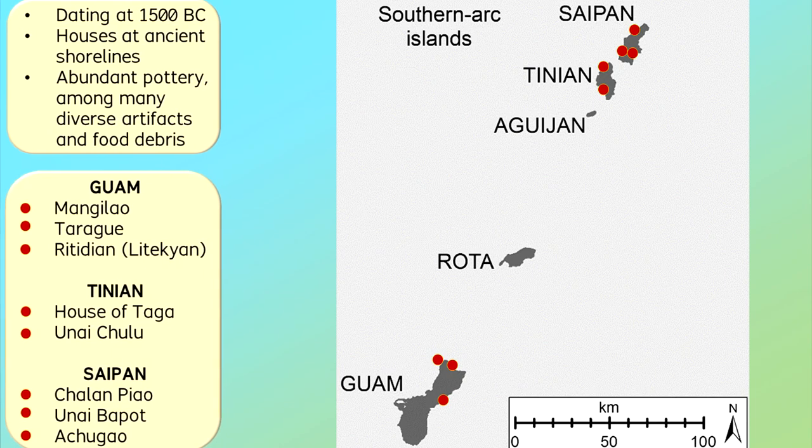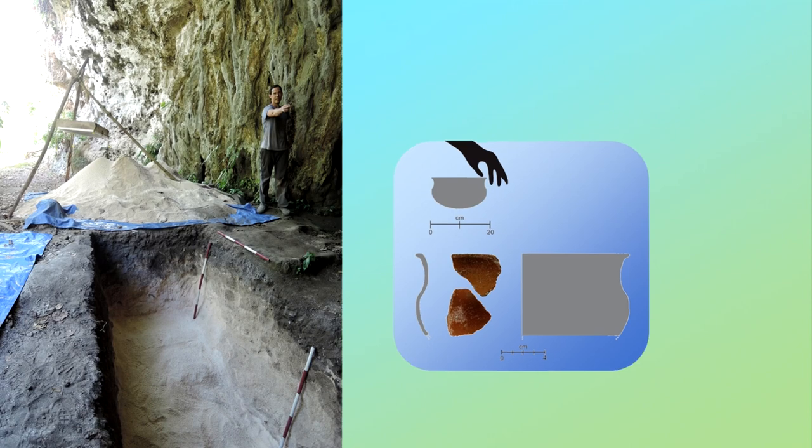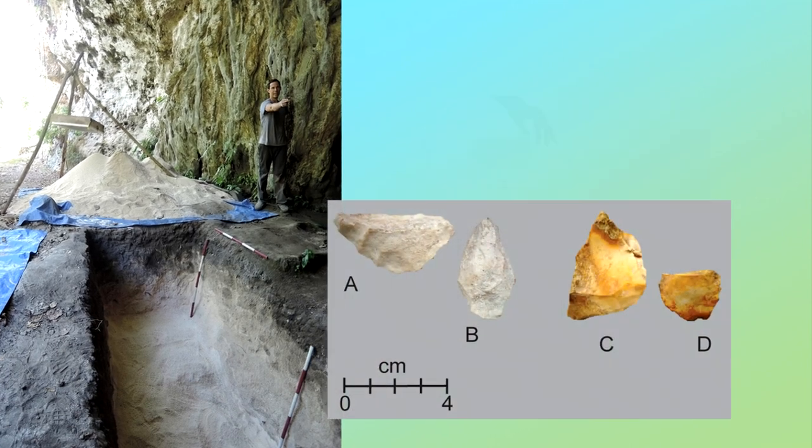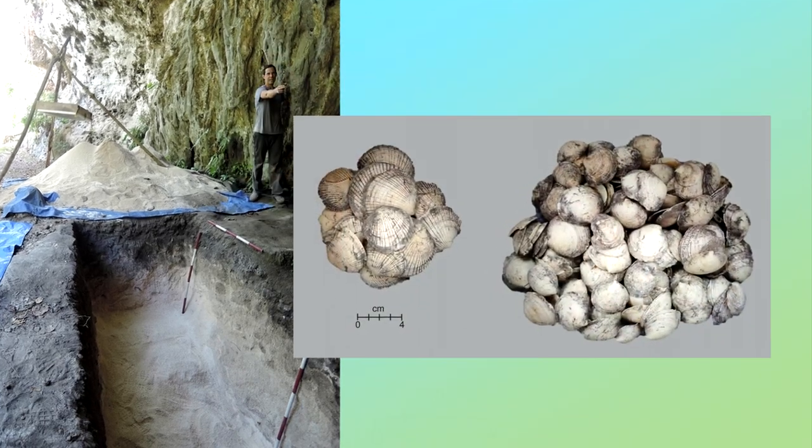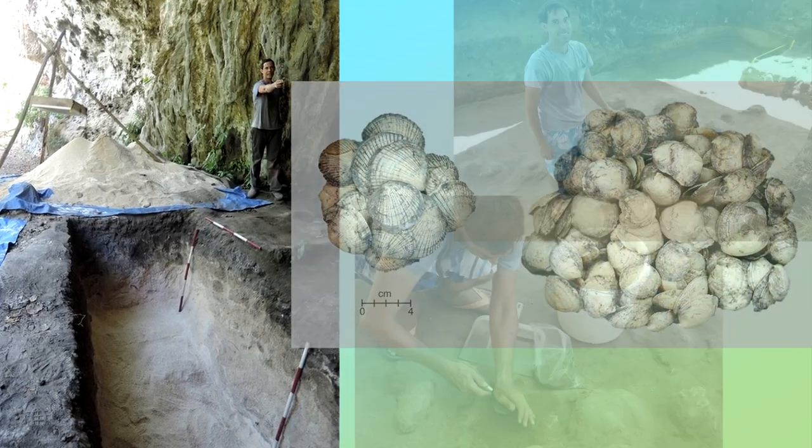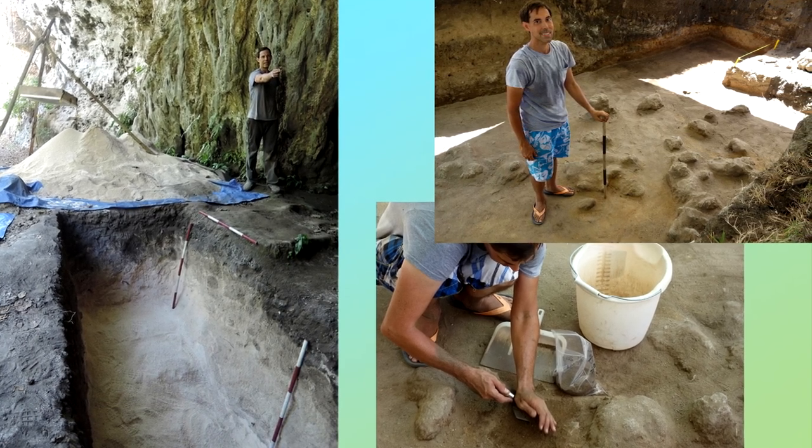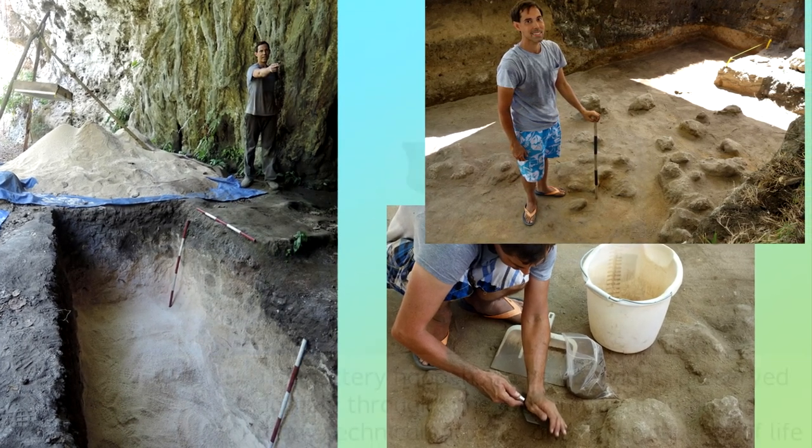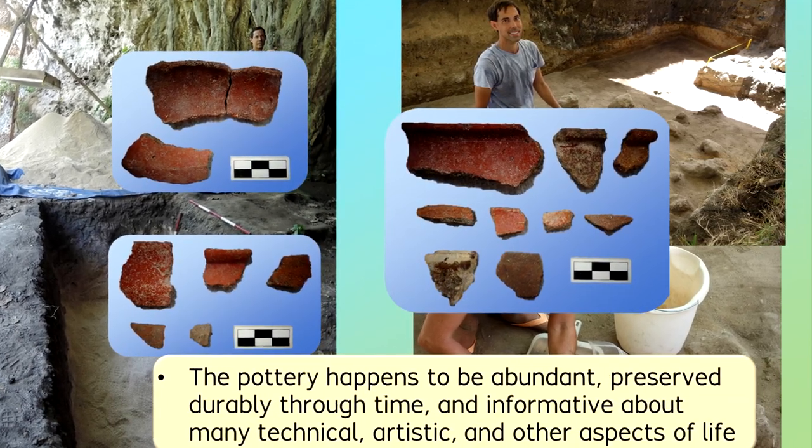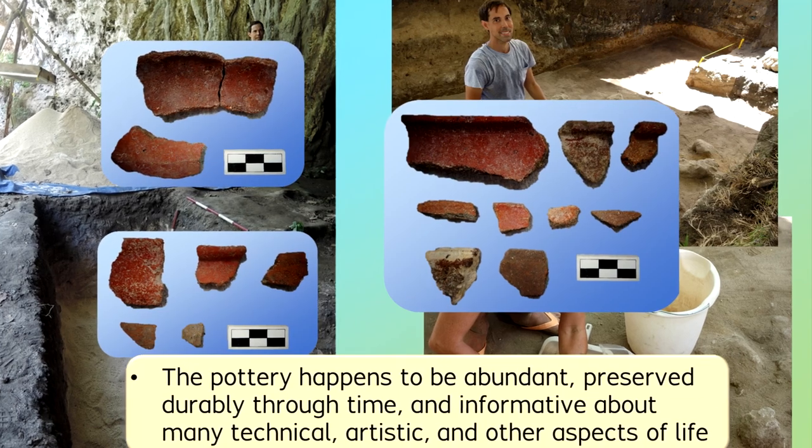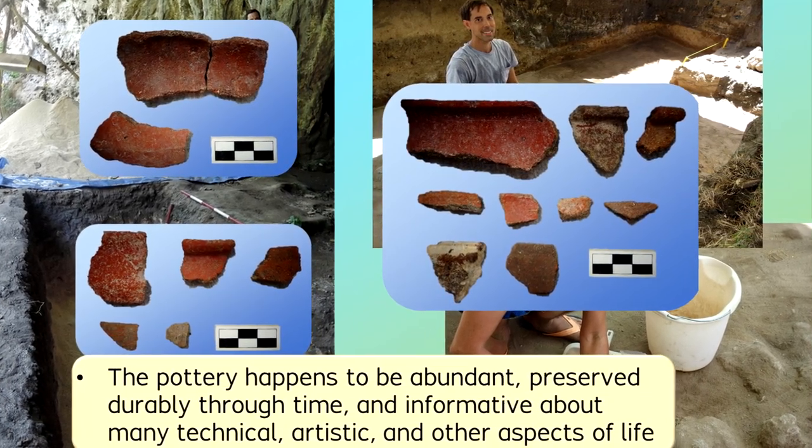The initial pottery-bearing horizon involved much more than just pottery. Archaeological layers have revealed stone and shell tools, diverse shell ornaments, food remains primarily of a seafood diet, and remnants of house posts positioned along ancient seashores. In these contexts, pottery fragments constituted the most numerous artifact category, and this video concentrates on the pottery evidence to support new thoughts, questions, and discussions.